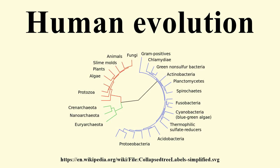The earliest bipedal hominin is considered to be either Sahelanthropus or Aurorin. Alternatively, either Sahelanthropus or Aurorin may instead be the last shared ancestor between chimps and humans. The earliest documented representative of the genus Homo is Homo habilis, which evolved around 2.8 million years ago, and is arguably the earliest species for which there is positive evidence of the use of stone tools.